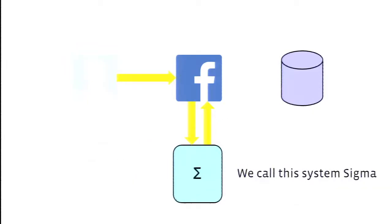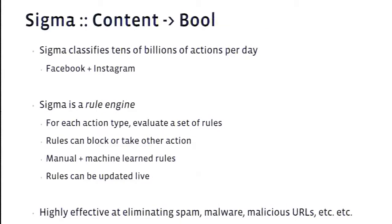That's exactly what we do. We have a system called Sigma at Facebook that lives in the back end. Sigma is basically a classification system — for every action taken by a user on Facebook, whether posting content, sending a message, clicking a like button, or sending a friend request, Sigma classifies all of these as malicious or not, covering tens of billions of actions per day including Facebook and Instagram. Sigma is a rule engine: for each action it evaluates a set of rules designed to identify characteristics of that action type and detect attacks. For a new attack we write a new rule, and each action type has a different set of rules.